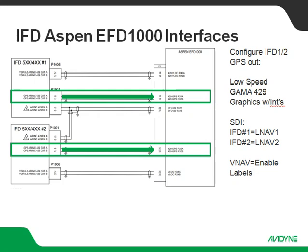To jump right in, on the IFD interface with the Aspen EFD1000, we're going to start off by looking at our GPS ARINC 429 out. This is the ARINC 429 data bus that's going to carry all of the GPS navigation information over to the Aspen. On the IFD side, we're going to configure both IFDs the same with the exception of SDI. It's going to be low speed. Gamma 429 graphics with intersections is the best setting — it's going to send you the most information.